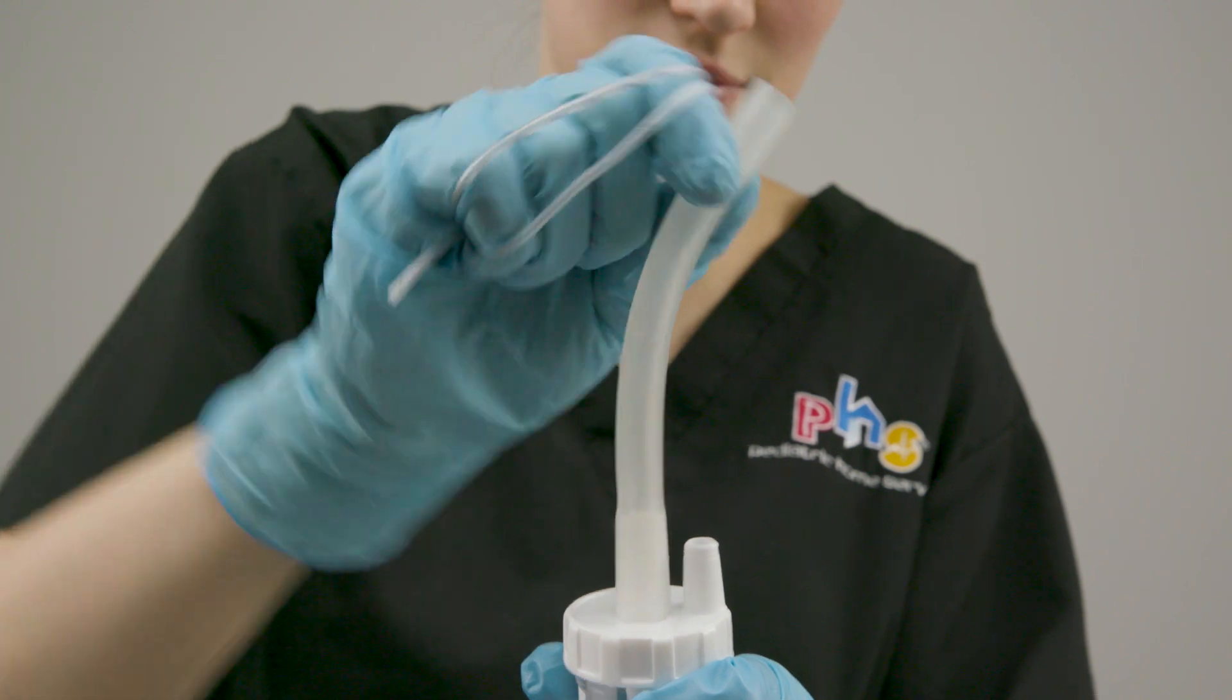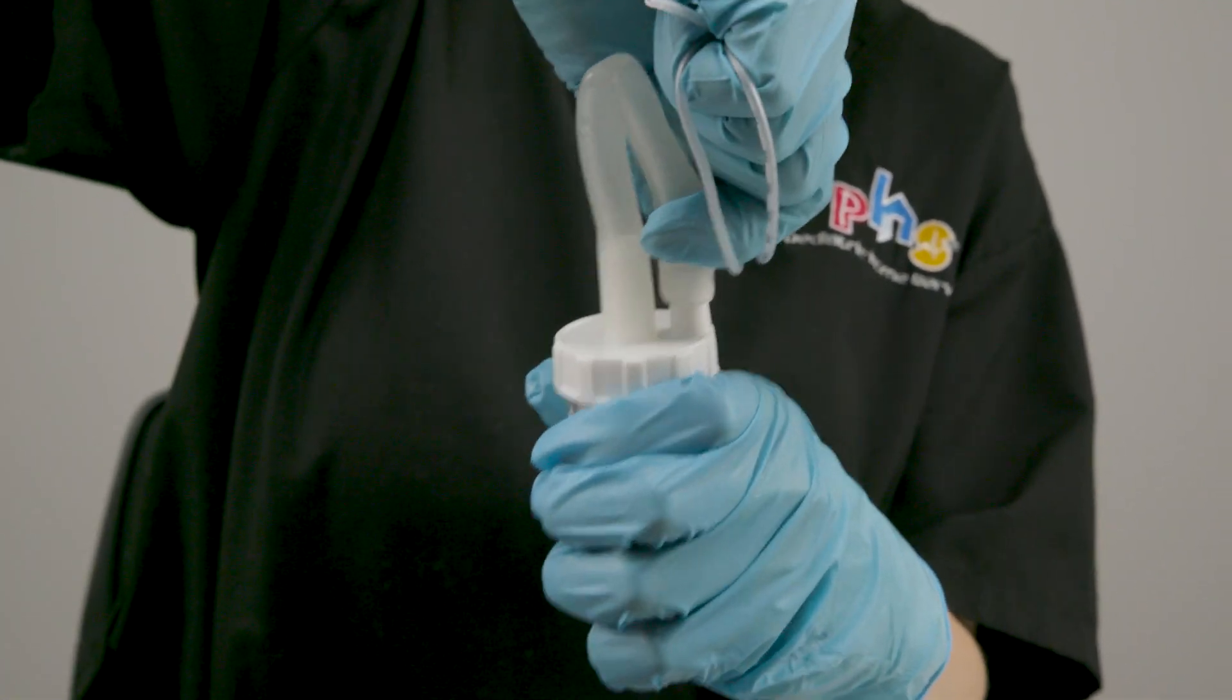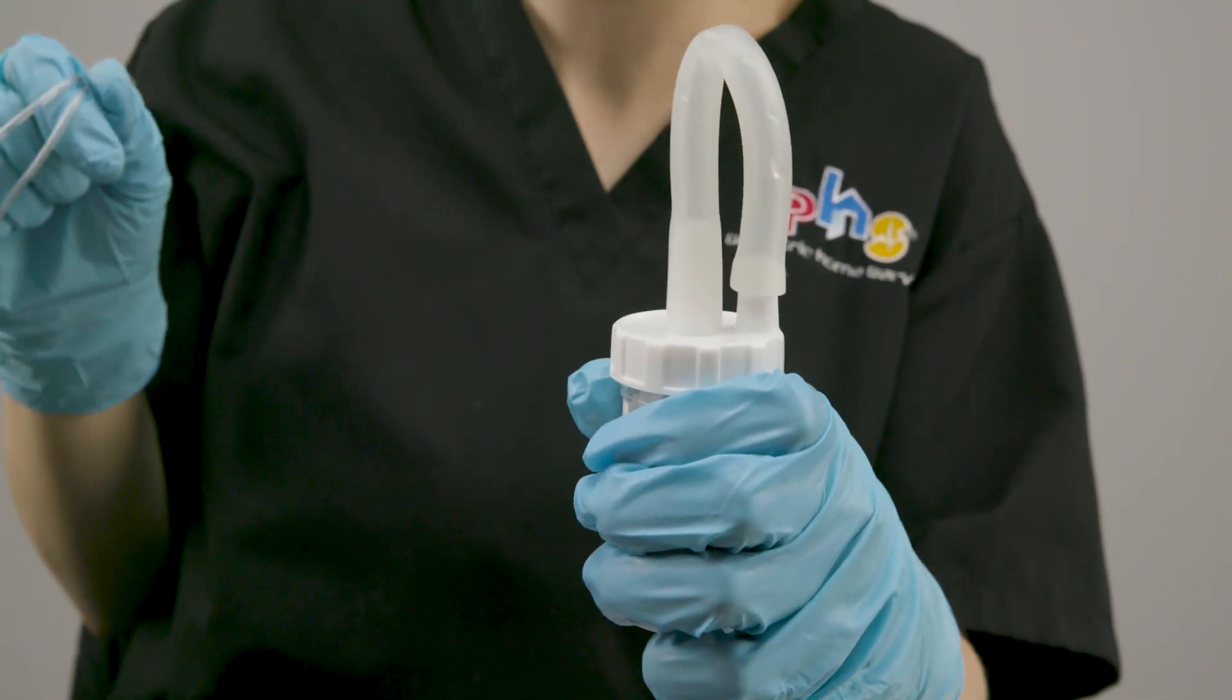To seal the specimen trap, fold the flexible section of tubing across to the other side of the trap and firmly push it onto the tubing port.